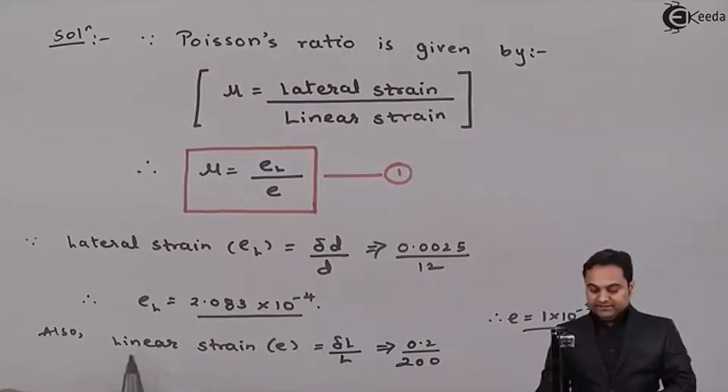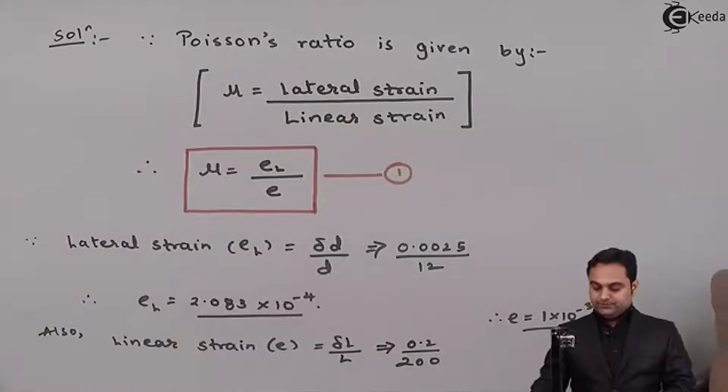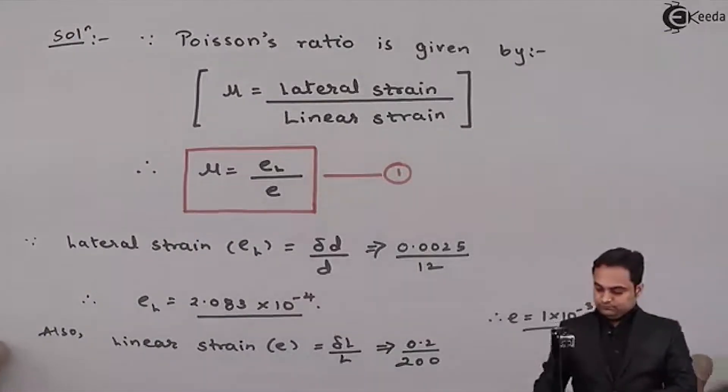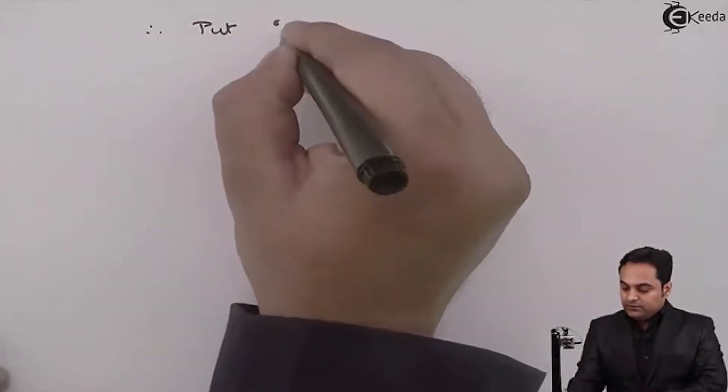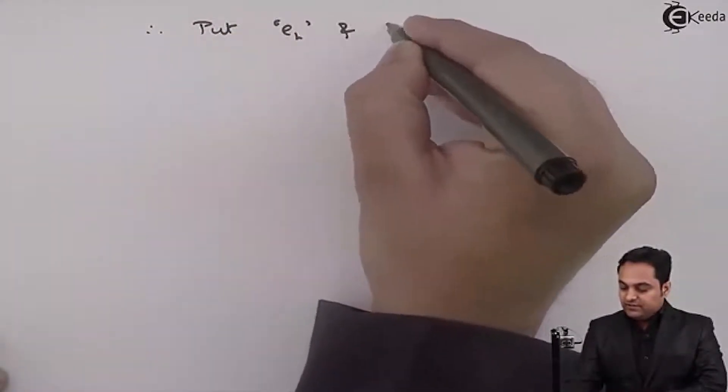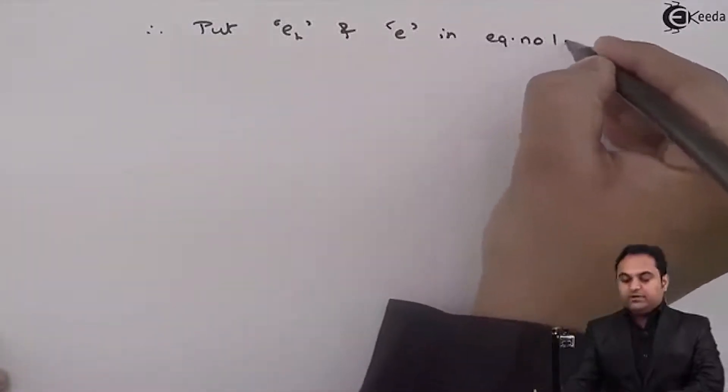Now after getting lateral strain and linear strain we can put the values in equation 1 to get Poisson's ratio. Therefore put lateral strain E suffix L and linear strain in equation number 1.